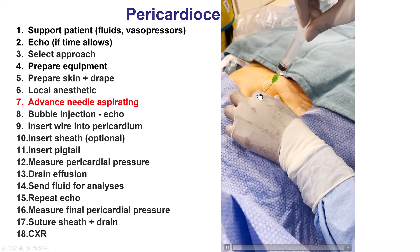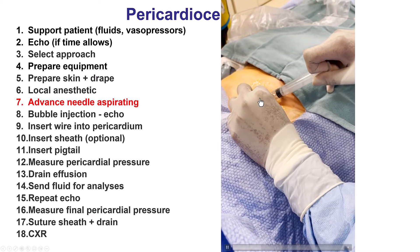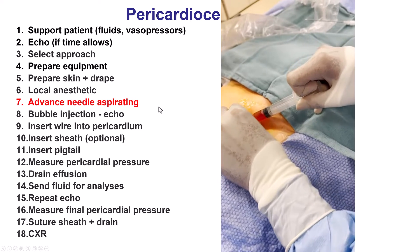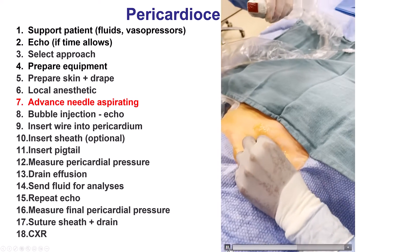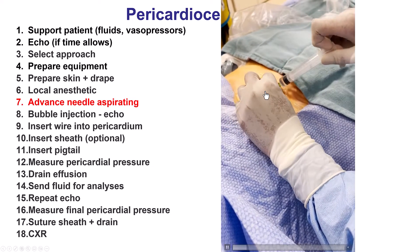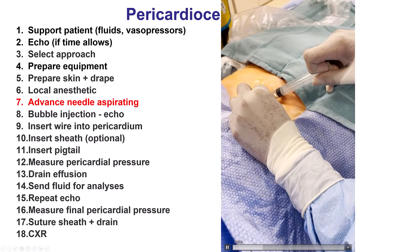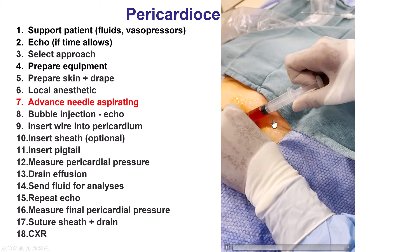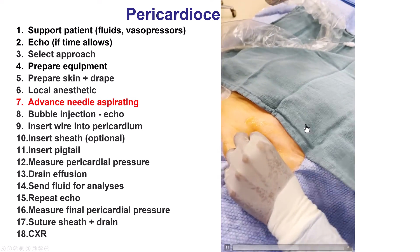The next step is to advance the needle into the pericardium. For the subxiphoid approach, we advance pointing the needle towards the left shoulder. It is important to first hit the bottom of the sternum, then go under it, turn the needle flatter, and aim for the left shoulder. At some point we start seeing fluid come back, which can be serous, serosanguinous, or blood.